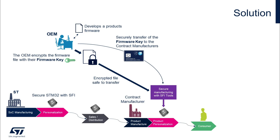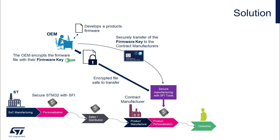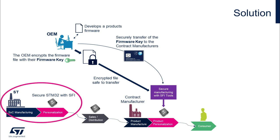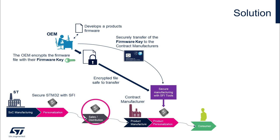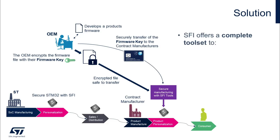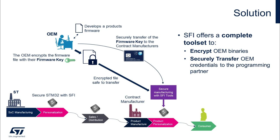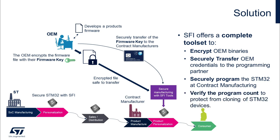In an SFI-enabled manufacturing, the OEM creates and manages its own secret encryption key — the firmware key — that is used to encrypt its application code, and then securely transfers the key which will be used by the CM for decryption of the SFI package. ST produces secure RSS-enabled STM32 devices provisioned with a unique private key and certificate. The CM will then be able to securely install the OEM application code using secure manufacturing SFI tools. To sum it all up, SFI offers a complete toolset to encrypt OEM binaries, securely transfer OEM credentials to programming partners, securely program the STM32 at contract manufacturers, and verify the programming count to avoid cloning and overproduction.